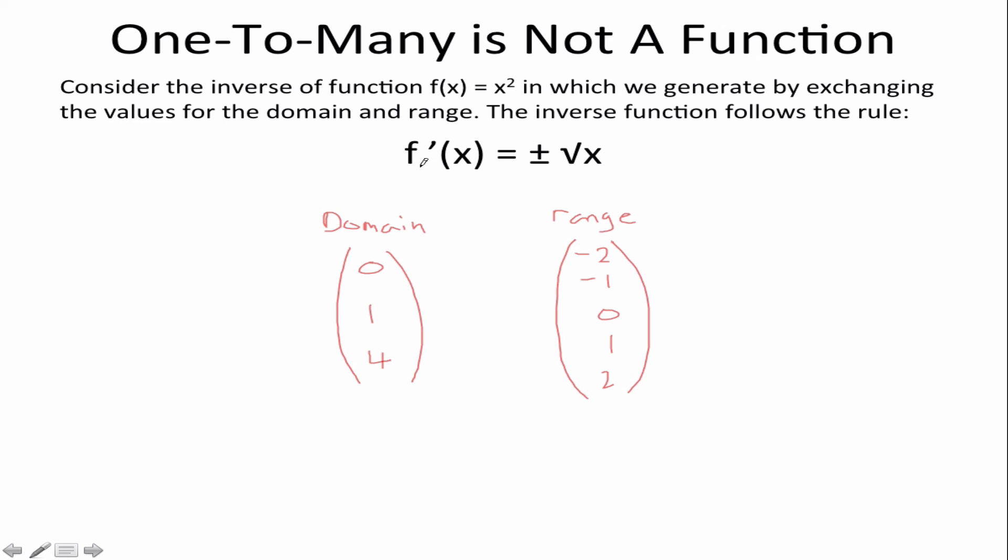My rule is the square root of x. When you square root a number you have the possibility of generating two values, a positive and a negative. The square root of 0 is 0. However the square root of 1 could either be negative 1 or it can also be 1. The square root of 4 can be minus 2 or it can be 2. So this is a one to many relation and this is not a function.